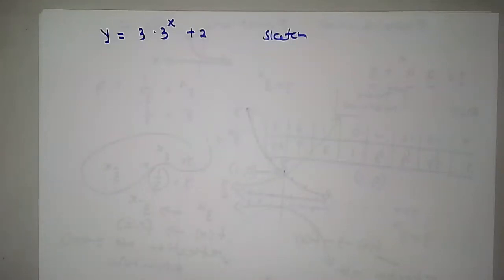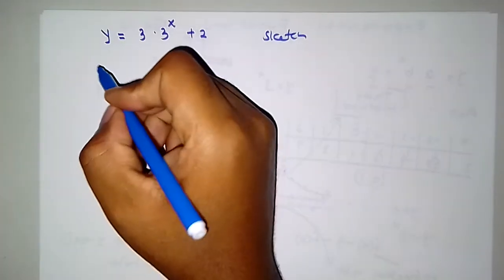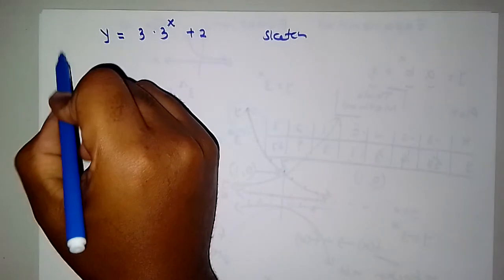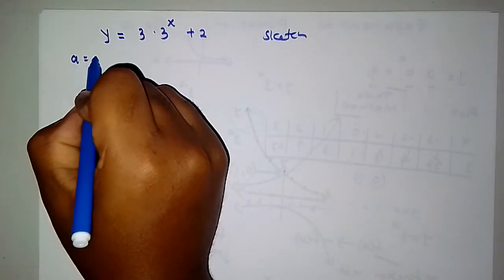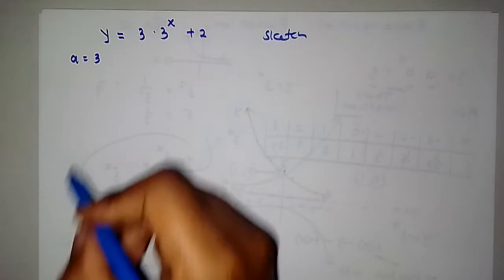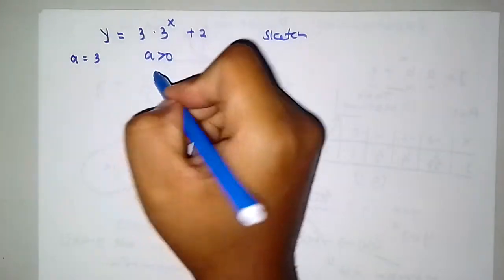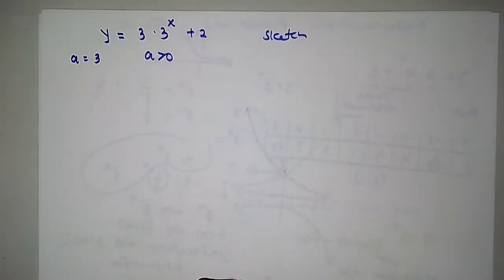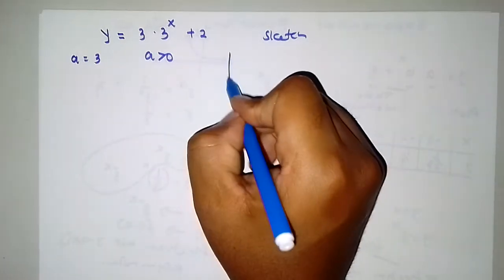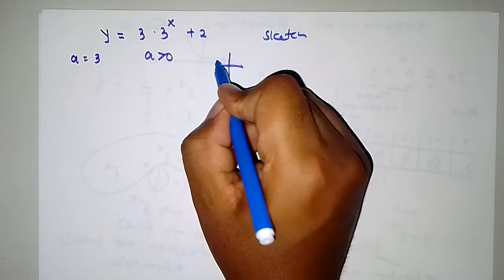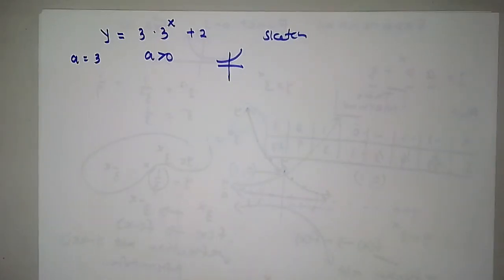Hello guys. You are given an exponential function y is equal to 3 multiplied by 3 to the x plus 2. You are asked to sketch it. So first and foremost, your a here is 3 — so your a is positive. That can tell you something about where your graph will be or how your graph is going to be positioned.